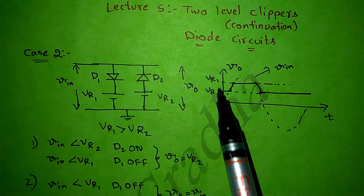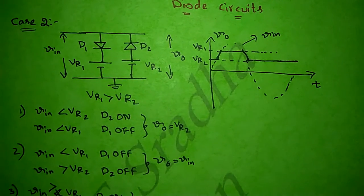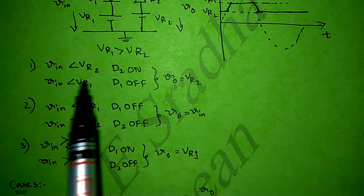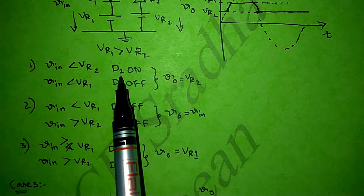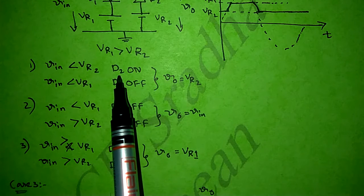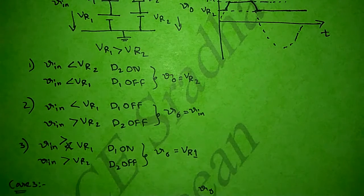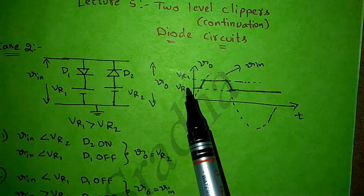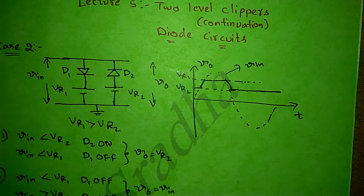Next, by comparing the waveform and the circuit diagram, I took three different cases and for each case I analyzed the states of diodes D1 and D2. According to that I derived the output. My output waveform for considering both reference voltages on the positive side will be like this.